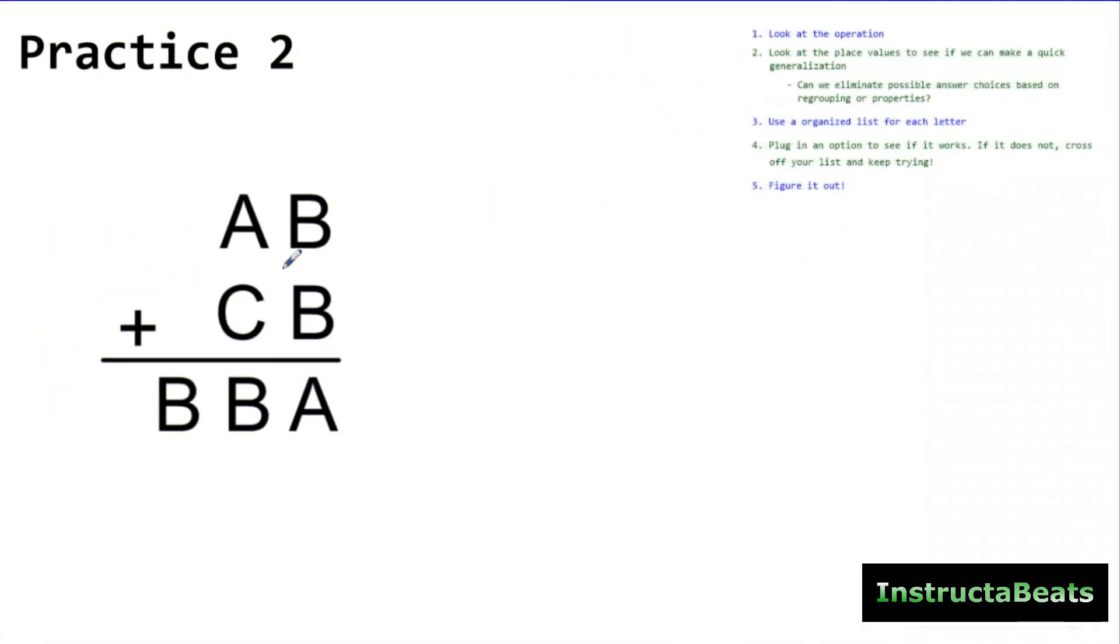So here I have AB plus CB equals BBA. So I have three different letters I'm trying to figure out. I'm going to begin with the end in mind by writing them down right here so I know what I'm looking for. And now I'm going to look at the operation, addition. I'm going to know that that helps me understand regrouping and what I might need to do.